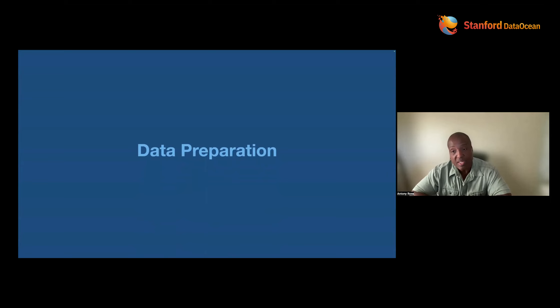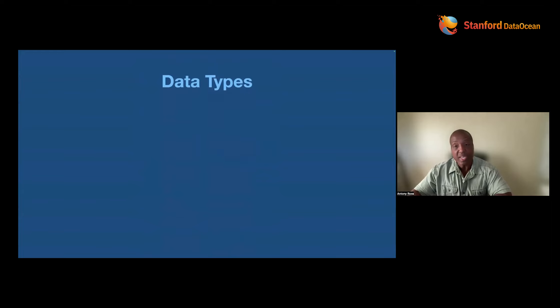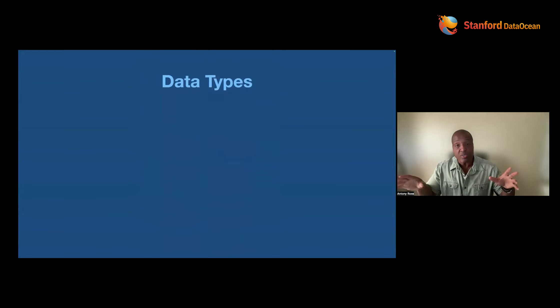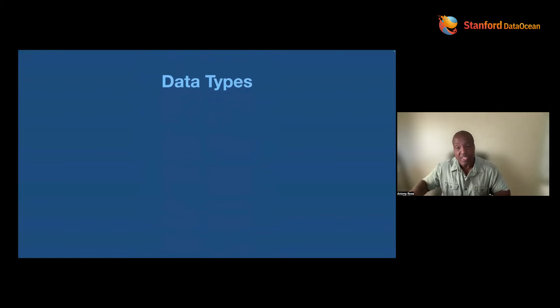When we talk about preparation, this is how we communicate to the machine. So when we do data preparation, let me tell you about some data types — your features, your columns. This is structured data: data that's in rows and columns.